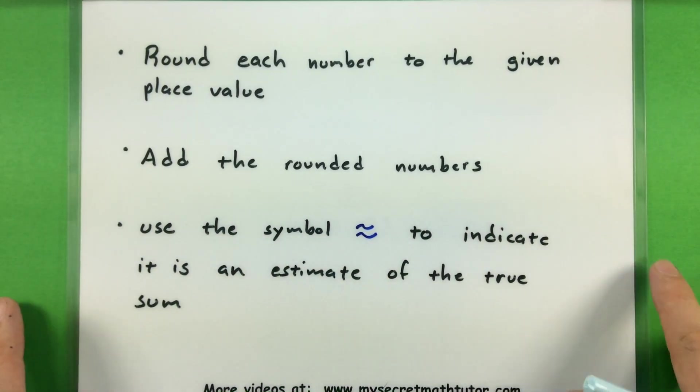Now the process for this is fairly simple, but essentially here's what you want to do. You first want to start off by rounding each of the numbers to their given place value. In a lot of instructions they'll say what place value you should round things to, and if they don't then you should probably just round them to the largest place value in each of the numbers.